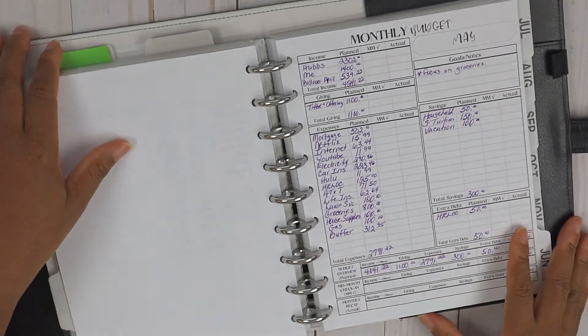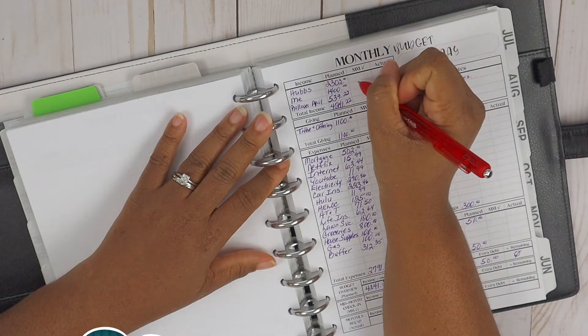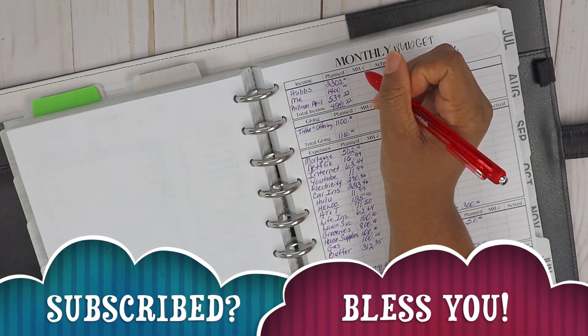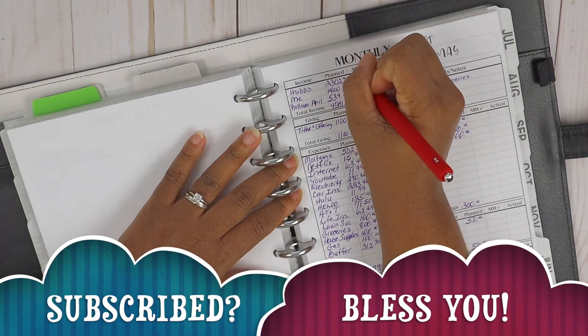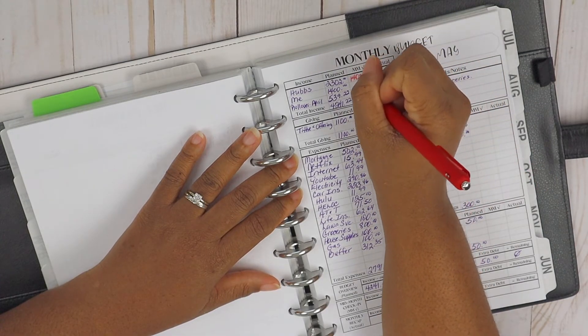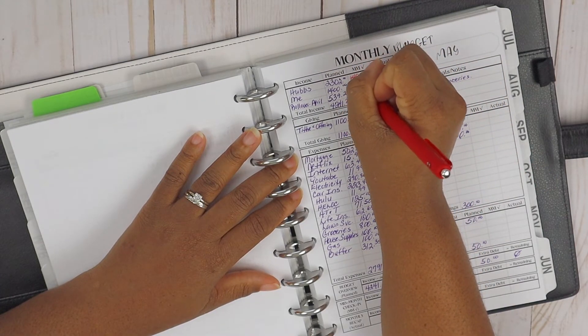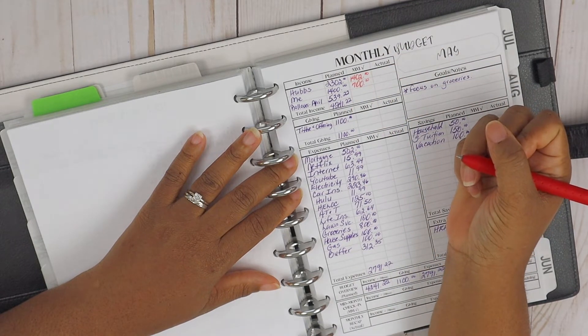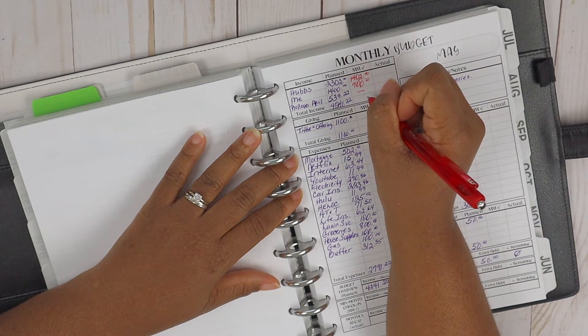All right, so let's go ahead and get right into this mid-month check-in. Hubs income, we did receive $1,402 direct deposited into this account, and then for me we received $700 direct deposited into this account.